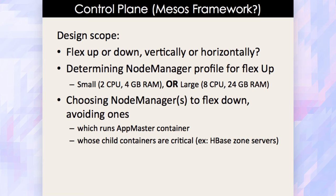With certain limitations currently being fixed in Yarn, we cannot choose certain node managers because they might be running app masters which, if killed, can have a devastating effect on the submitted job. Also, some distributed databases like HBase run on Yarn, and if you have one in your data center, your scheduling algorithm needs to be very careful when flexing down a node manager — you don't want to take down one running a critical container like an HBase region server, which might affect the availability of the database.